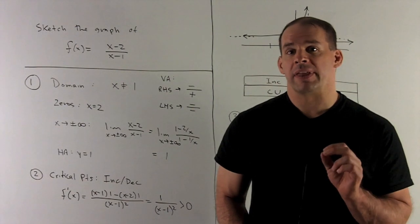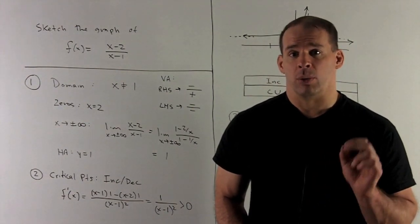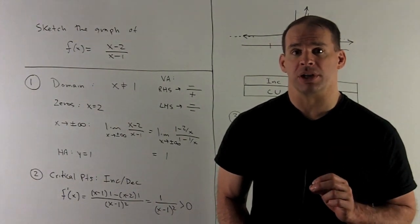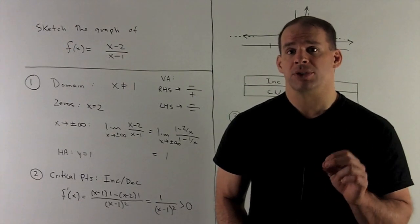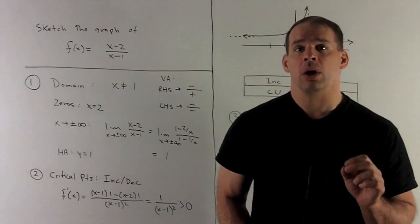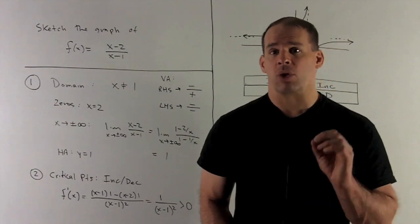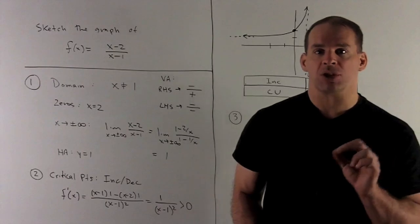Now, I've done everything that I can do without taking the derivative. So let's take the derivative. I have a quotient, so we apply the quotient rule. Low d-high less high d-low over low squared. I crunch that down. That gives me 1/(x-1)^2.